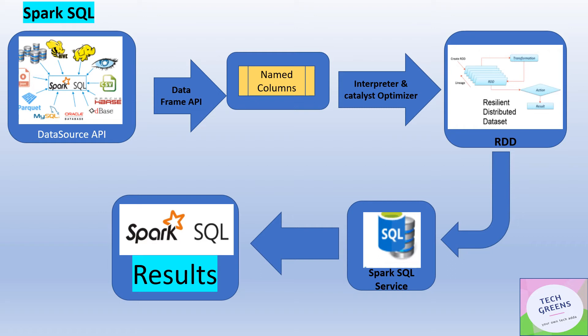This is the high-level flow of how Spark SQL works. It starts with the data source; once data is onboarded in the Spark SQL context, DataFrame APIs are applied on it. The representation of data onboarded from different sources is your DataFrame. You can apply all available operations on the DataFrame, then that goes to the Spark SQL interpreter along with the Catalyst Optimizer, which produces the execution plan. The underlying RDDs and lineages, along with the execution plan, go to the Spark SQL Service which finally produces the result.